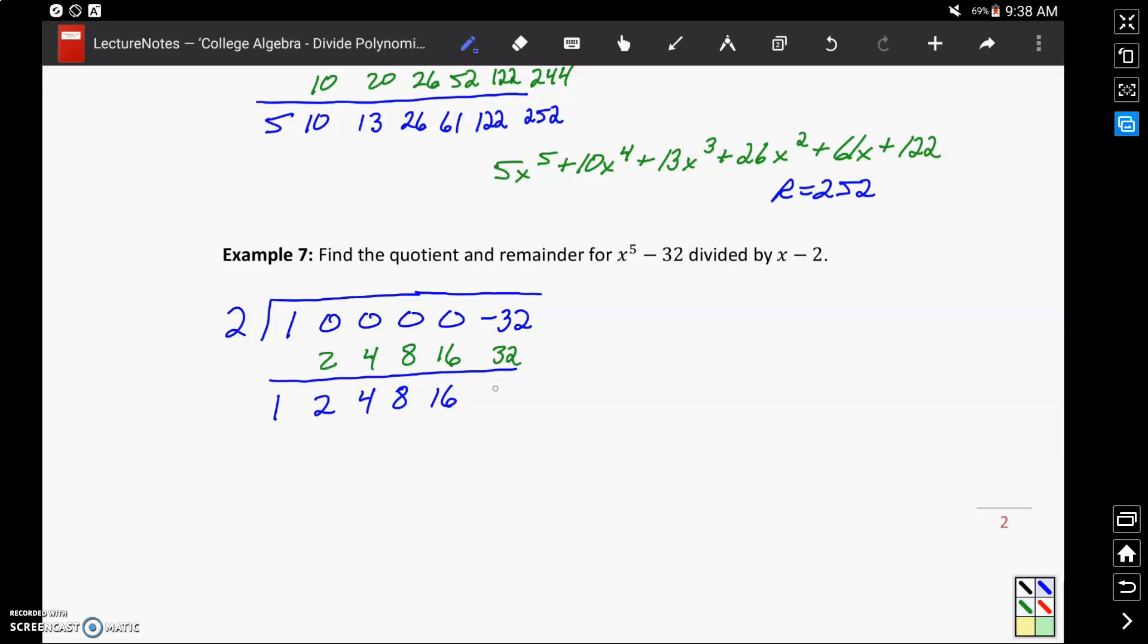And in this case, we end up in that bottom right corner with a remainder of 0, meaning that when we take x to the 5th minus 32 divided by x minus 2, we come up with a polynomial x to the 4th plus 2x cubed plus 4x squared plus 8x plus 16.